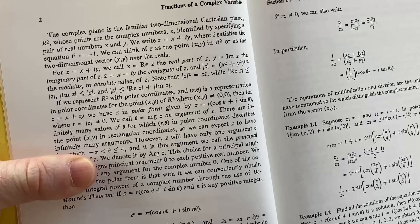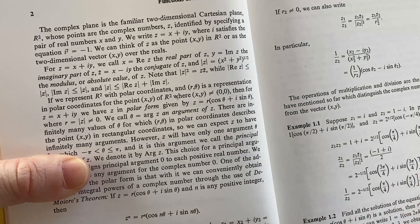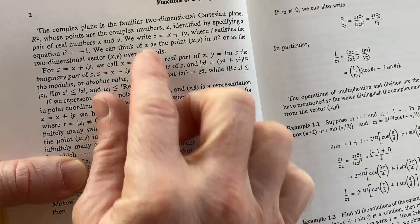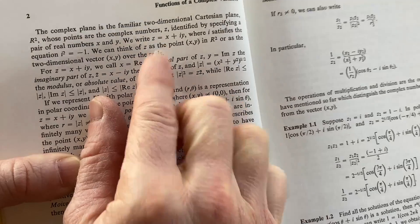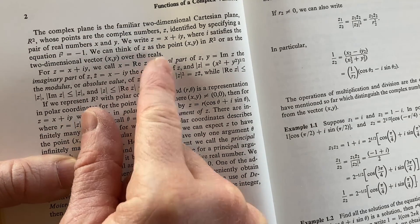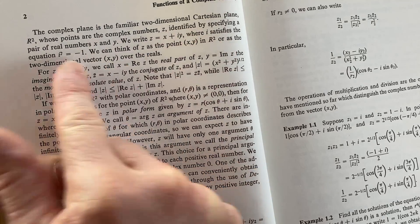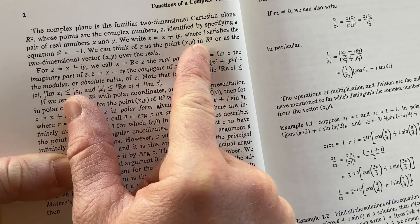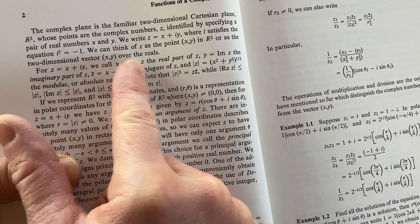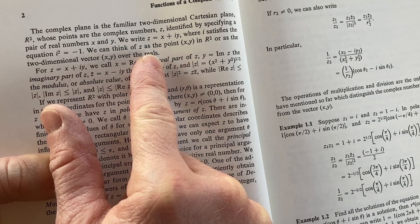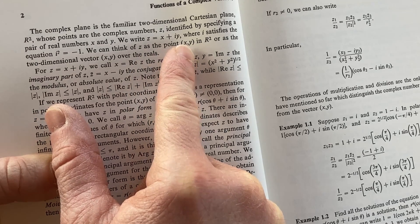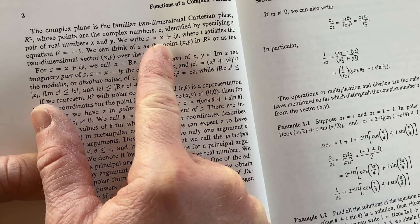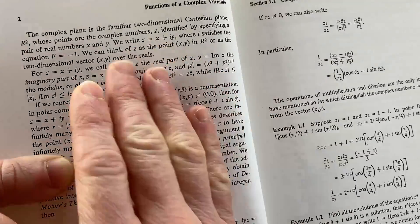The complex plane is the familiar two-dimensional Cartesian plane, R squared, whose points are the complex numbers z, identified by specifying a pair of real numbers x and y. So we write z equals x plus iy. So x here is called the real part of the complex number, and y is called the imaginary part. Where i satisfies the equation i squared equals negative 1. We can think of z as the point (x, y) in R squared, or as the two-dimensional vector (x, y) over the reals. So there's different ways to think about it. You can think about it as a point in R squared, or as a vector over the reals. You can also think of it as the sum of x plus iy, and you can do operations with it that way.